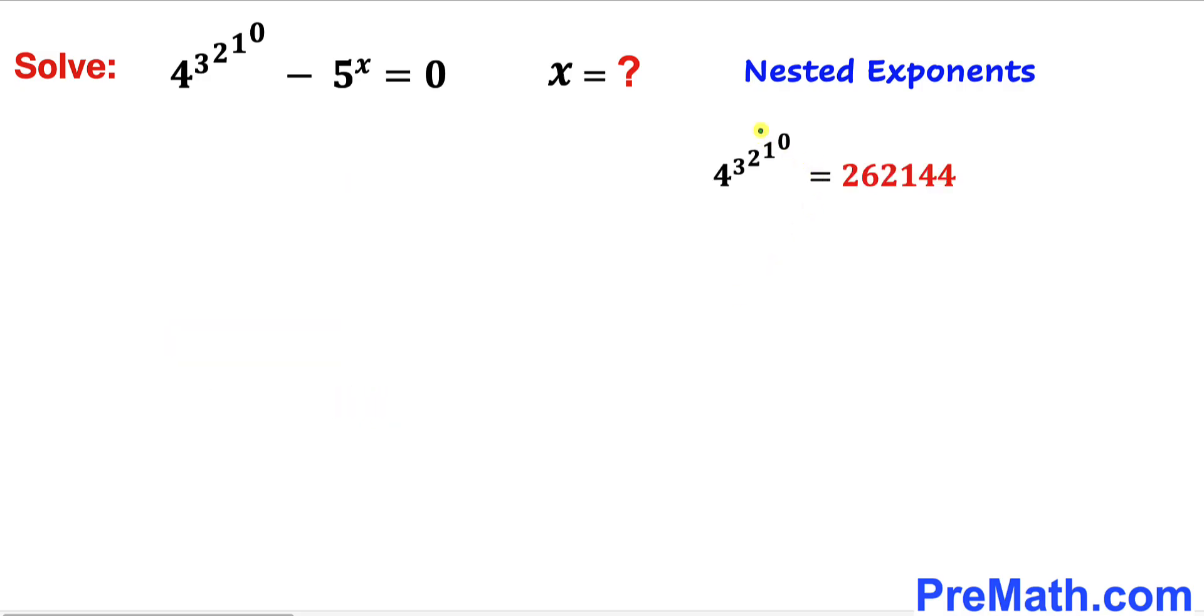So thus our nested exponents value turns out to be 262,144. And I'm going to plug that value in this part over here.